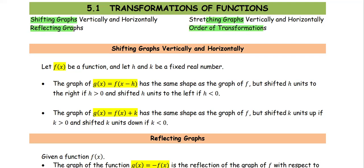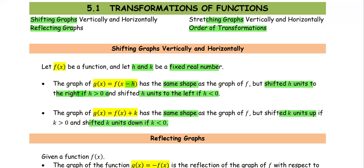Let's look at shifting graphs vertically and horizontally. Let f of x be a function and let h and k be fixed real numbers. The graph of g(x) = f(x − h) has the same shape as the graph of f, but shifted h units to the right if h is positive, and h units to the left if h is negative. The graph of g(x) = f(x) + k has the same shape as the graph of f, but shifted k units up if k is positive and shifted k units down if k is less than 0.